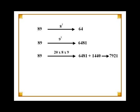In the next step, we multiply all the digits with each other and then multiply the result with 20. So multiplying 9 with 8 we get 72 and multiplying it again with 20 gives us 1440. We now add 1440 to 6481 obtained earlier. This gives us 7921 which is our final answer. Thus the square of 89 is 7921.